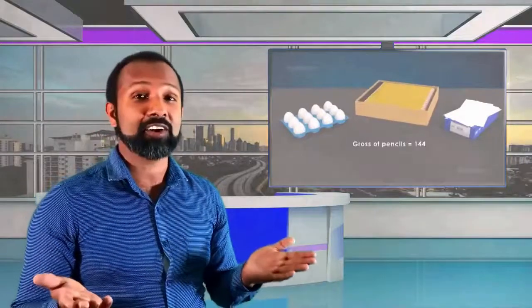Before explaining that, think about how in day-to-day life we explain a certain quantity easily. For example, if there are 12 eggs, we use the term 'dozen.' For 144 pencils, we call it a 'gross.' And if there are 500 sheets of paper in a bundle, we call it a 'ream.' This is how we explain the quantity of certain entities using a single term — dozens, gross, and ream.